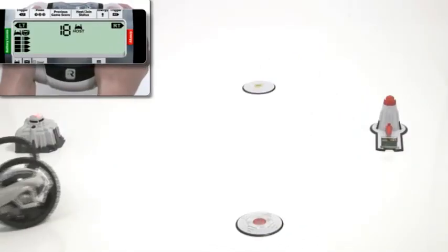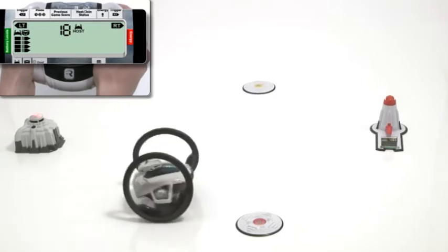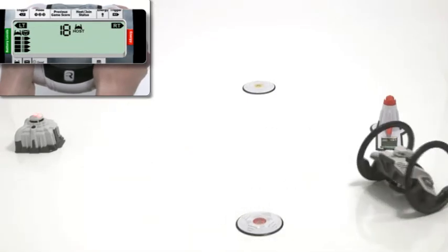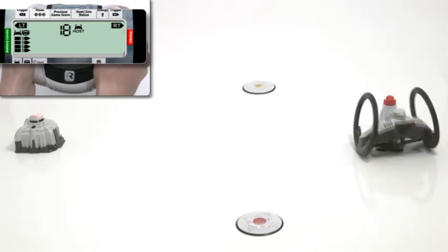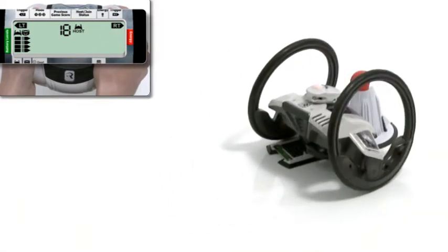Robanii consumes virtual energy and will drive around really slowly if it is low. The energy level is shown on the remote's LCD. Energy can be loaded at the energy port.